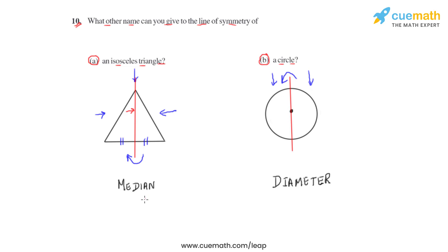To summarize: an isosceles triangle has a median which is its line of symmetry, and a circle has a line of symmetry which is its diameter. This is how we answer question number 10.